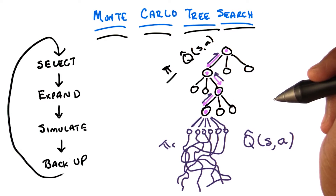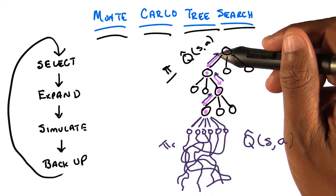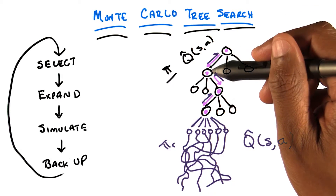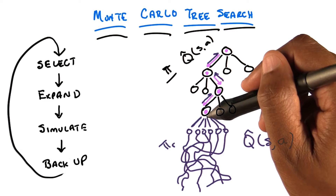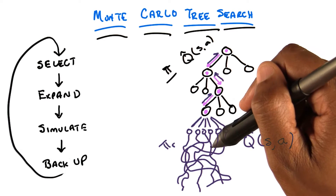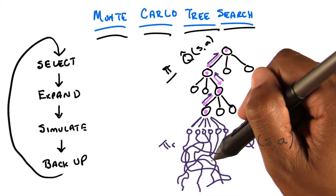So we're taking greedy steps down the black part of the tree. When we hit a leaf, then we do the rollout policy, pi_r, to get estimates of those different values.